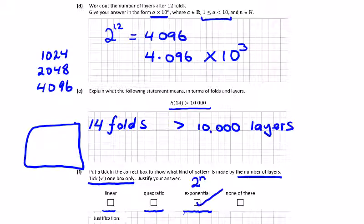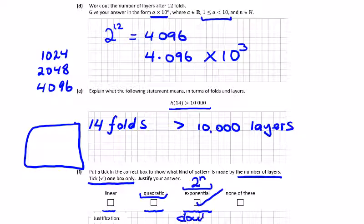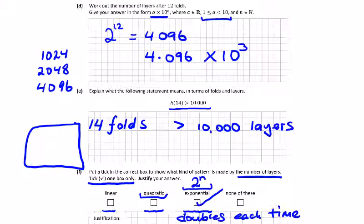For your justification, you can say it doubles each time, or note the power — it's an exponential equation. In this form there is a power. A quadratic equation also has a power, but because it doubles each time, write 'doubles each time' — it's exponential, not quadratic.